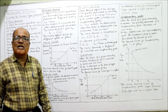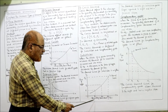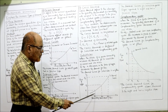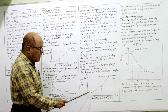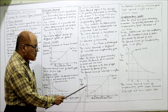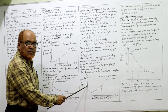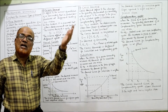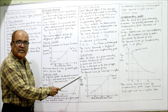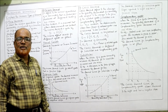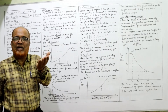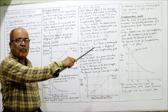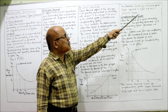The demand curve for substitute goods slopes upward to the right, showing a positive relationship. On the x-axis is demand for tea; on the y-axis is price of coffee. When P1 is the price of coffee, Q1 is the quantity demanded of tea. When price increases to P2, demand for tea increases to Q2. When price increases to P3, demand for tea increases to Q3. The cross-demand curve for substitute goods has a positive slope.